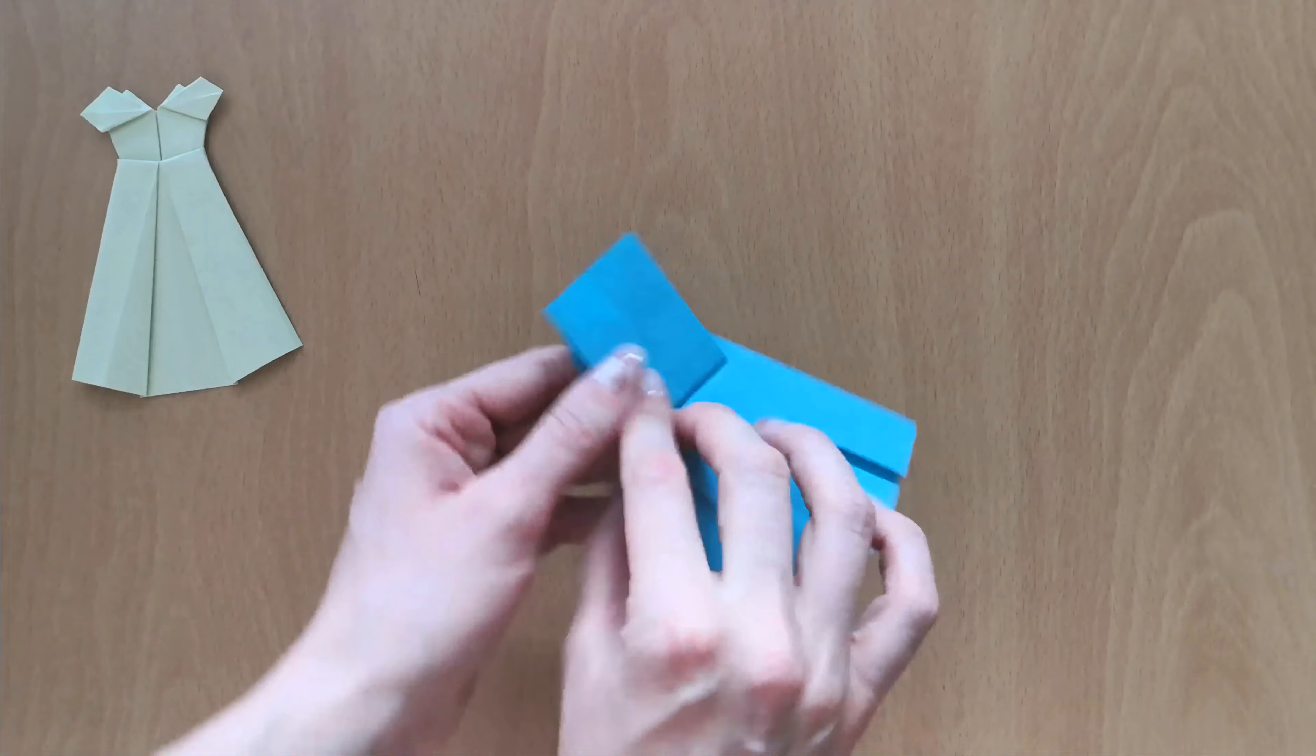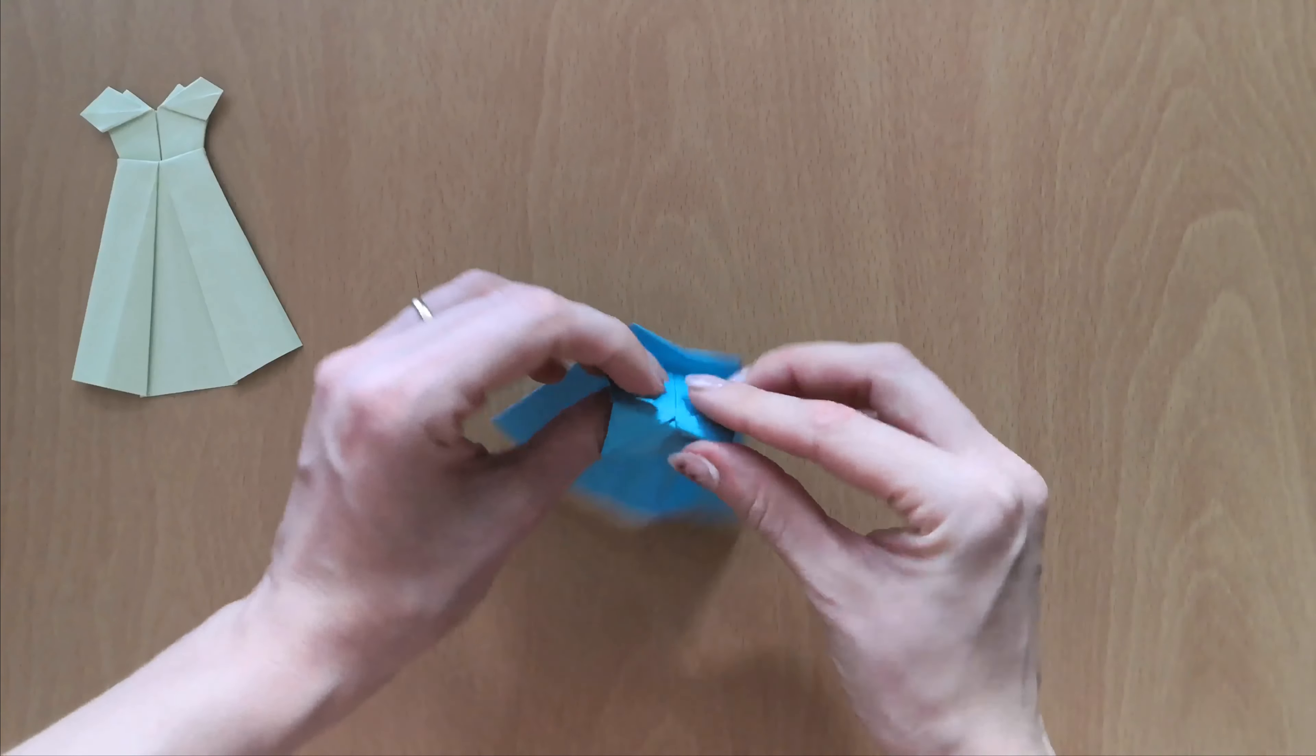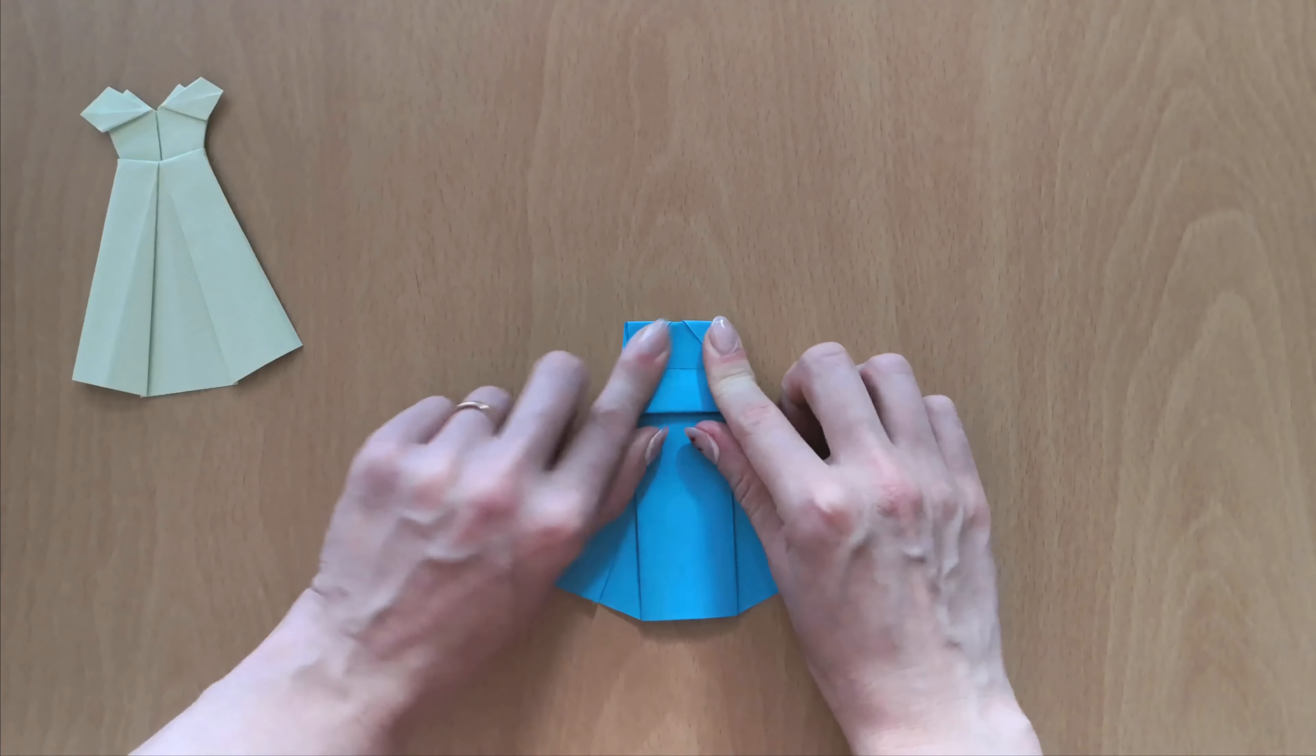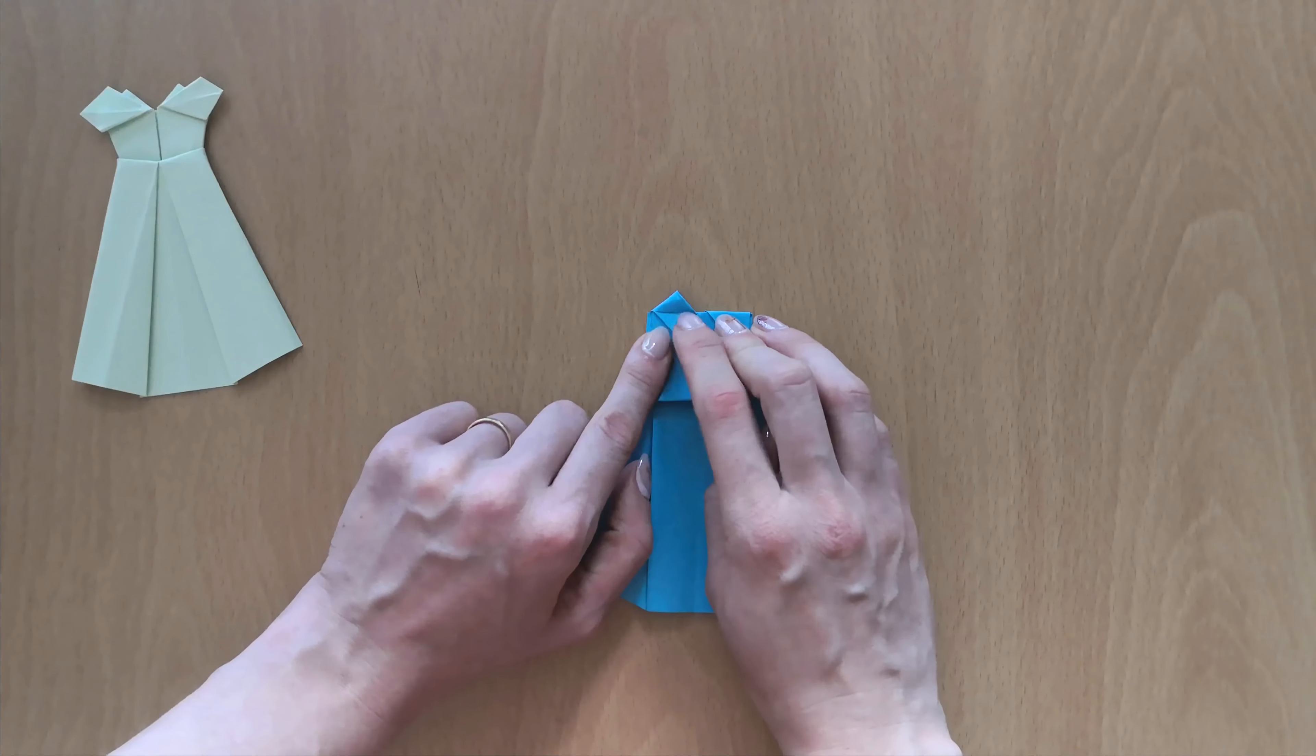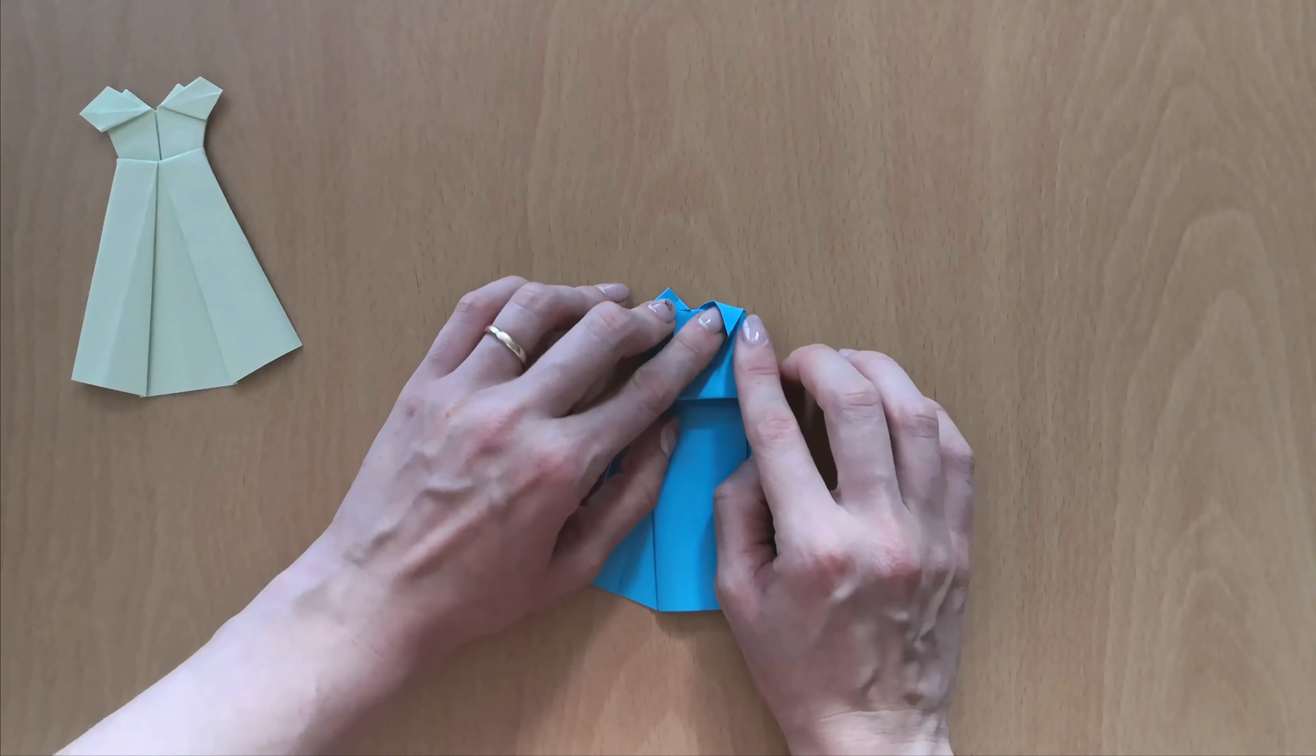And now turn your paper over. Fold the upper part downwards, like so, so that it's in the middle of those triangles. And now just open these pockets right here. And once they're open, press it down so that this part of the paper, this line, is aligned with this bottom line of the paper. On one side and on the other.